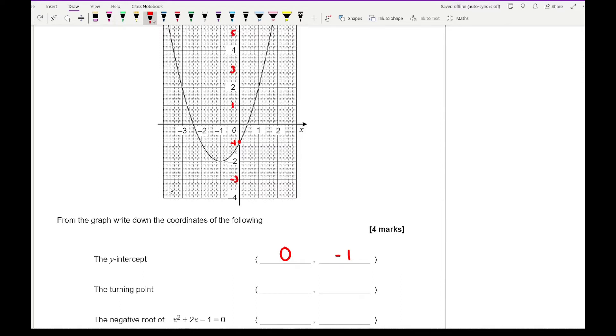The next question then says the turning point. Well the turning point is this coordinate here. That coordinate is minus 1, minus 2. Next question then says the negative root of x squared plus 2x minus 1 which is here. So again I want to give a number that is roughly anywhere between minus 2.5 and minus 2.4 and that's going to be 0.